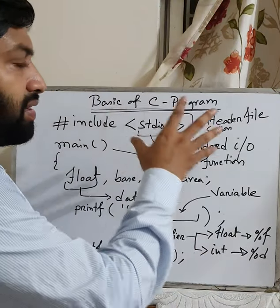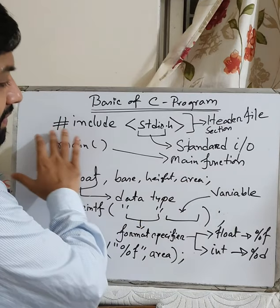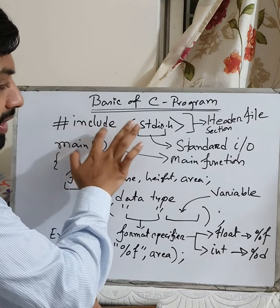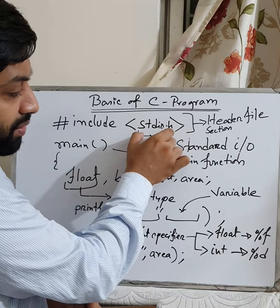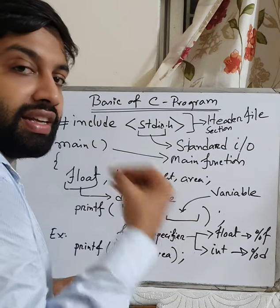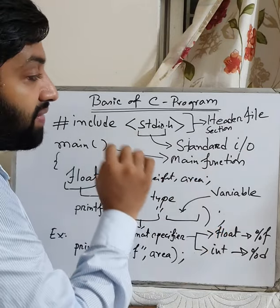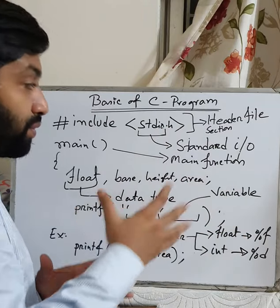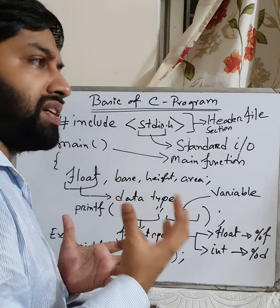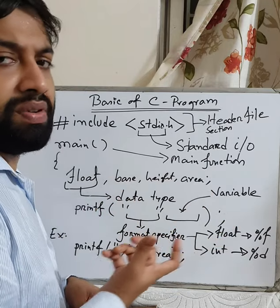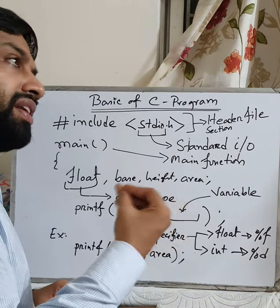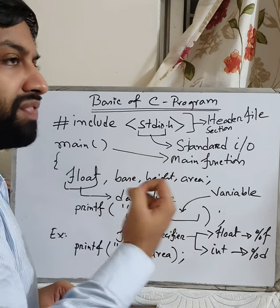The first part of a C program is the header file section. You simply use the hashtag, then 'include', then 'stdio.h'. stdio.h stands for standard I/O — that means standard input-output header file. You need to include this to use functions like printf and scanf in your C program. This header file is mandatory for any C program, as input and output is very common in any type of software program.